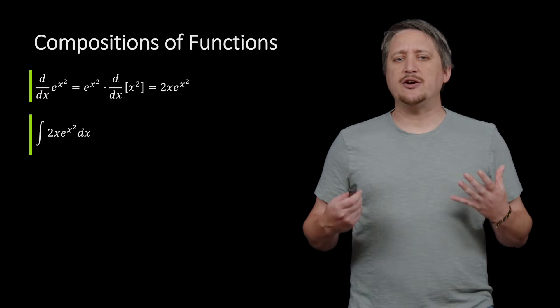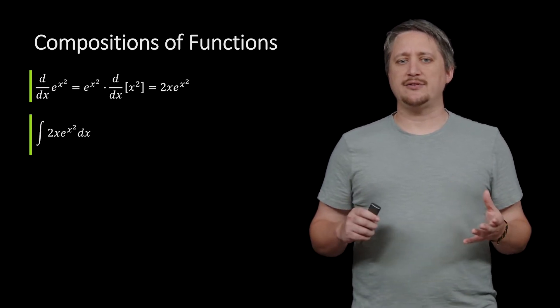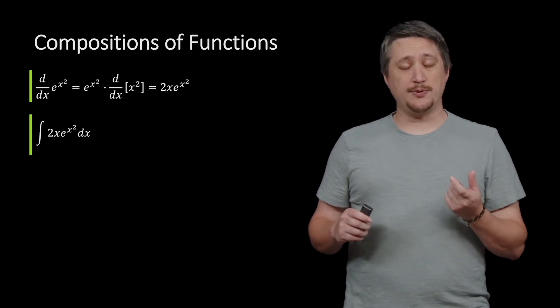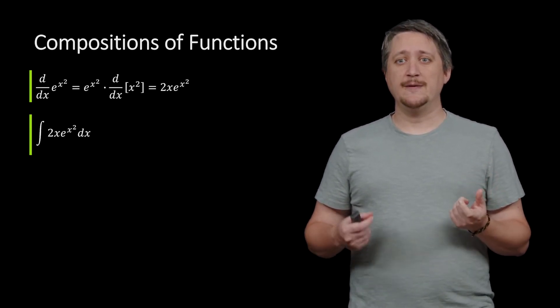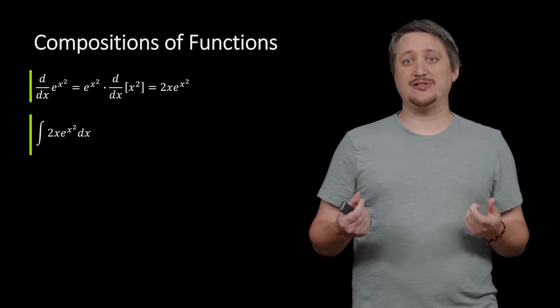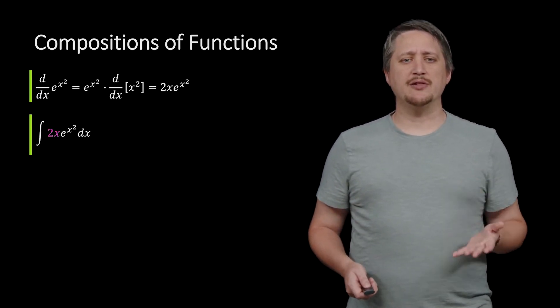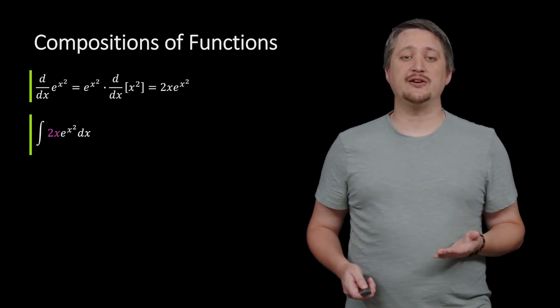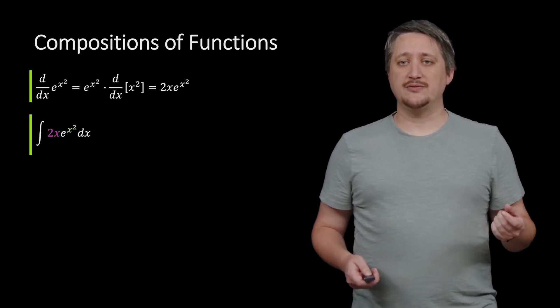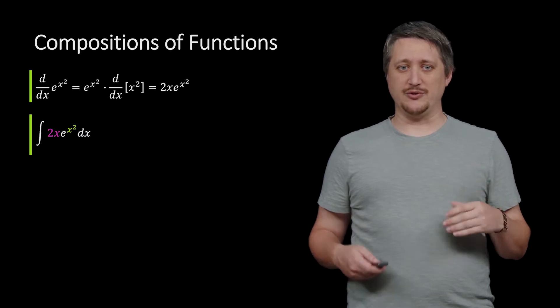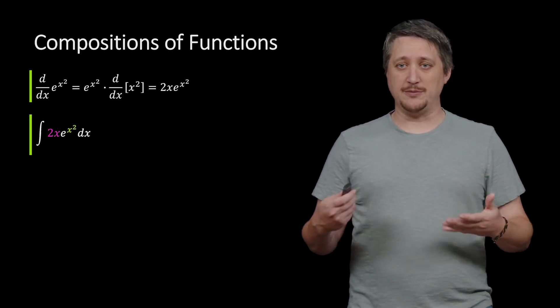Here it often helps to sort of look at the individual parts and see if you recognize that there is a derivative of one piece lurking outside. So in particular, I look at this and I see that 2x floating outside, and then I notice that there's that x squared as the piece up at the top, the inner function or that exponent part.